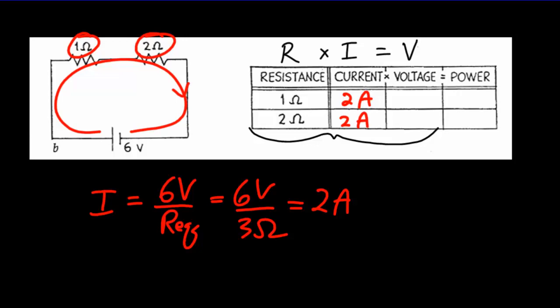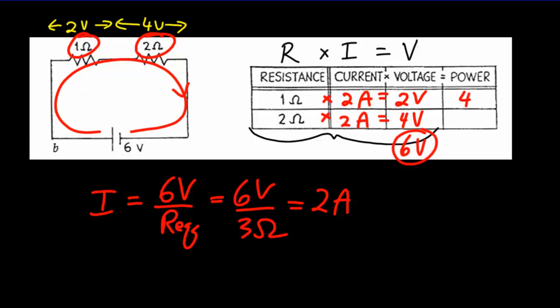We can use Ohm's law - resistance times current equals voltage - and we get values of 2 volts and 4 volts. So we get 2 volts across the first resistor and 4 volts across the second resistor. You'll notice they add up to give 6 volts, the voltage of the battery. We can also extend our table because power equals current times voltage. Multiplying: 2 times 2 gives 4 watts, and 2 times 4 gives 8 watts of power being used in the second light bulb.